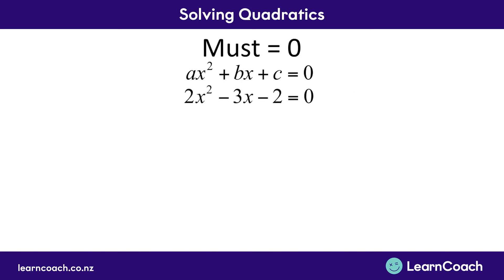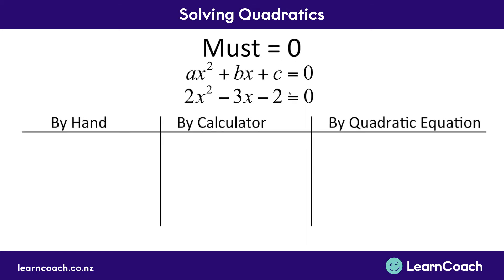For this example, a — the number in front of x squared — would be 2, b would be negative 3, that's the number in front of the x, and c would be negative 2, that's just the number by itself. Now let's look at our first method, which we should have learned in the Level 1 video for solving quadratics — doing it by hand.